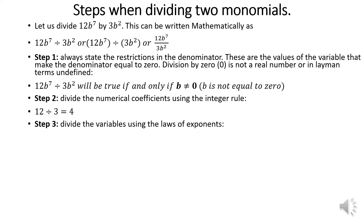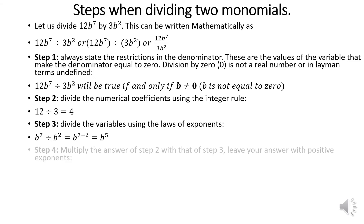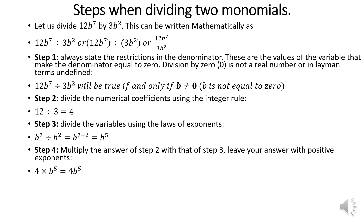Step number 3: divide the exponents using the laws of exponents. We divide the variables: b⁷ ÷ b². When the bases are the same and we divide, we subtract the exponents: b to the power of 7 minus 2 is b⁵. Step number 4: multiply the answer of step 2 with that of step 3 and leave your answer with positive exponents. The product of step 2 was 4, step 3 was b⁵, giving you 4b⁵.